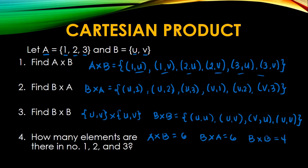Another way to solve this, to get how many elements when you use a Cartesian product, is to count the number of elements in set A, we have 3. Count the number of elements in set B, we have 2. And then you multiply. So 3 times 2, we have 6. For number 2, we have 2 times 3, that is 6. And number 3, we have 2 times 2, we have 4.